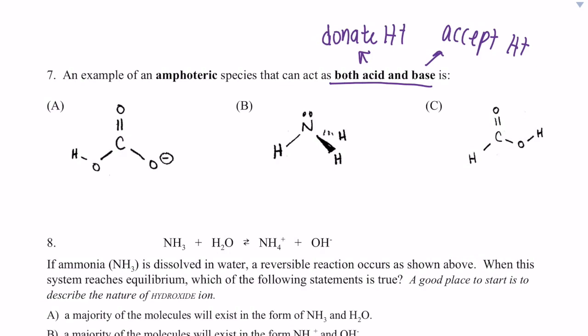So if we look at A, we need a polar hydrogen to donate, which this species has. It can donate this proton. But it also has a spot here where it can gain or accept a proton. So A is a good answer.